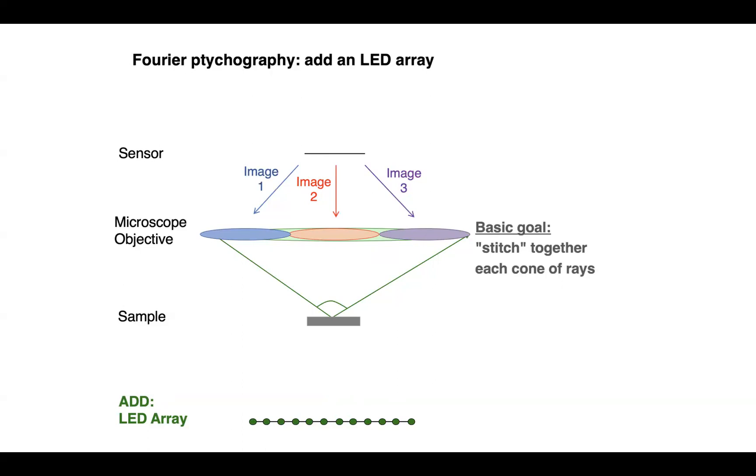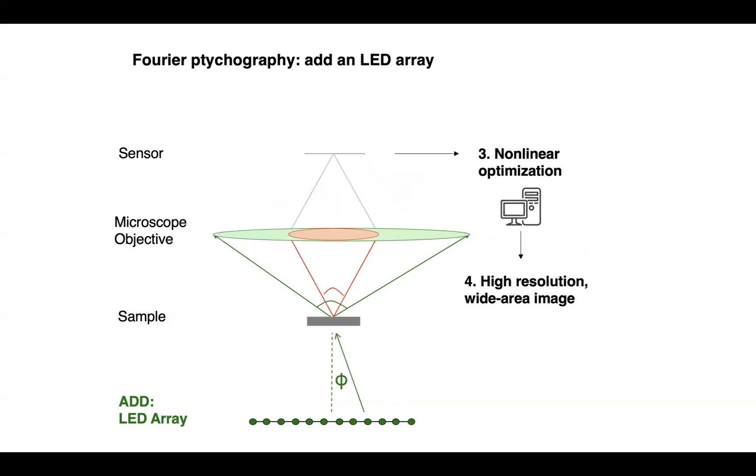Our computational goal in Fourier ptychography is to then take that captured set of low resolution images and put them back together to appear as if they came through a lens that was the size of the big green cone of rays. Essentially, we want to stitch the images together in the space of this green cone, which for those of you who know a little bit about optics is the Fourier space. So we use a nonlinear optimization algorithm to do this. The output is a high resolution image across a wide area.